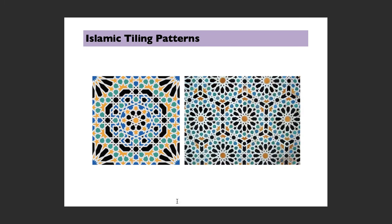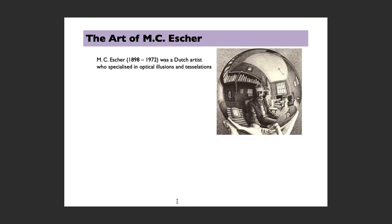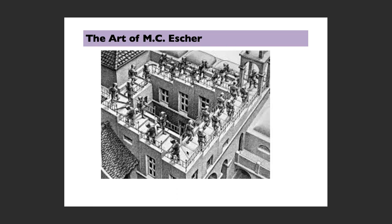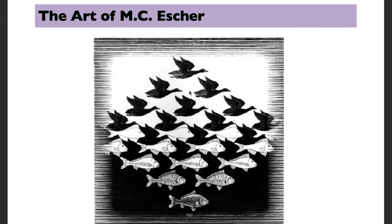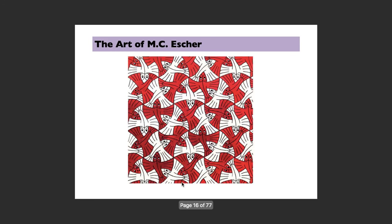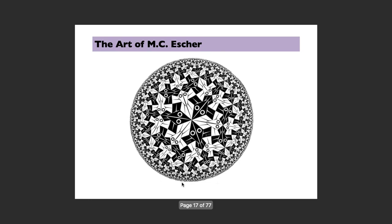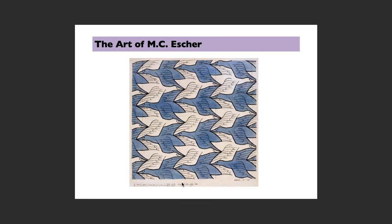Finally, we briefly looked at Islamic tiling patterns and the art of M.C. Escher, who created famous optical illusions — such as a staircase that always appears to go up or down — as well as tessellating patterns where birds morph into fish. There's a very good M.C. Escher Museum in The Hague, Netherlands, worth visiting if you're ever there.